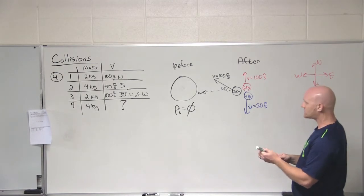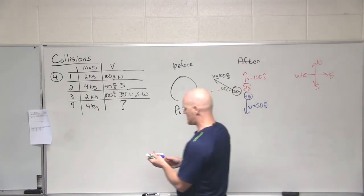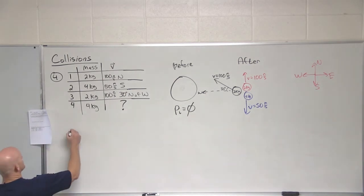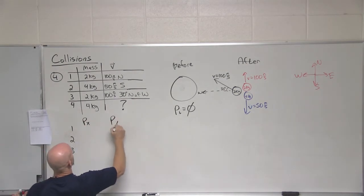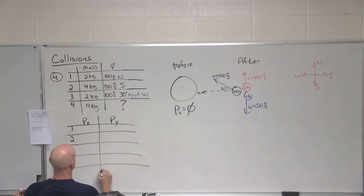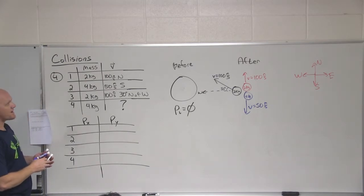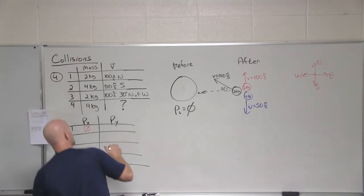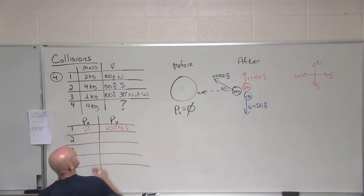So if we look at this, we're going to break up every one of these momentums into their x and y components. So going back, let's make another chart. We're going to have fragments one, two, three, and four. And then we're going to have the x component of the momentum and the y component of the momentum. Okay, so let's look at the first fragment. What is the momentum of the first fragment in the x direction? Zero. Great. It's not moving east, west at all. What is its momentum in the y direction? 200.